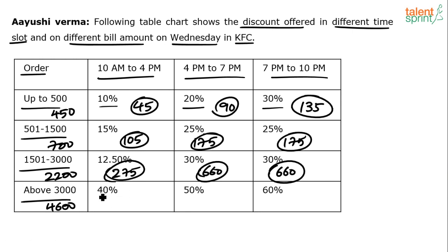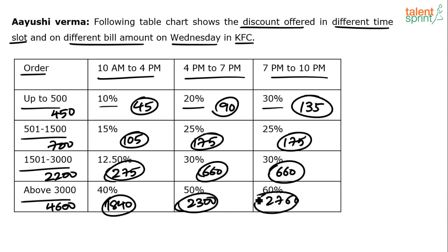For 4600 rupees: 40% of 4600 is 460 × 4 = 1840, and 50% is 2300. Whatever the value, you should be quick in getting the discount. These are all example assumptions — don't get confused about how I got 2200 or 4600; I'm just using examples to explain how to get the discount.